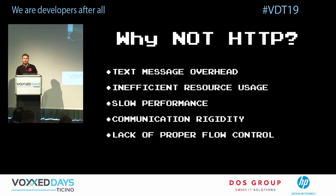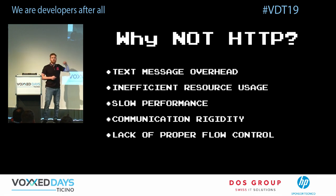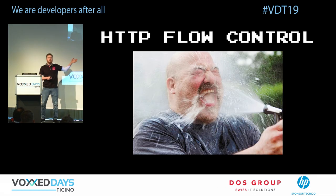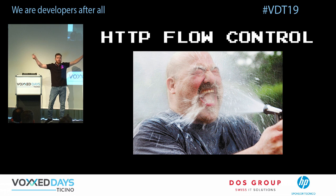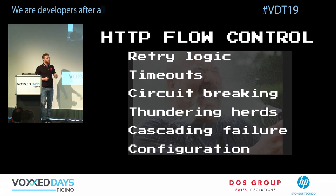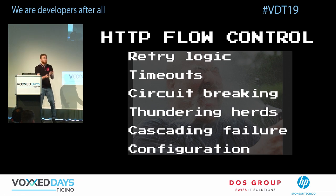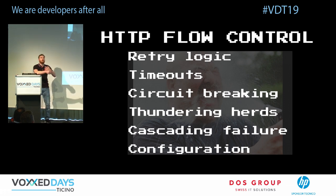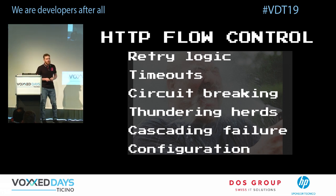The most critical problem is lack of proper flow control. Imagine your server just throws all messages into your client's face. You have to implement different patterns: drop messages, retry, apply timeouts when the server becomes unresponsive. This leads to over-engineering. The server either has to buffer everything, start dropping, or crash.